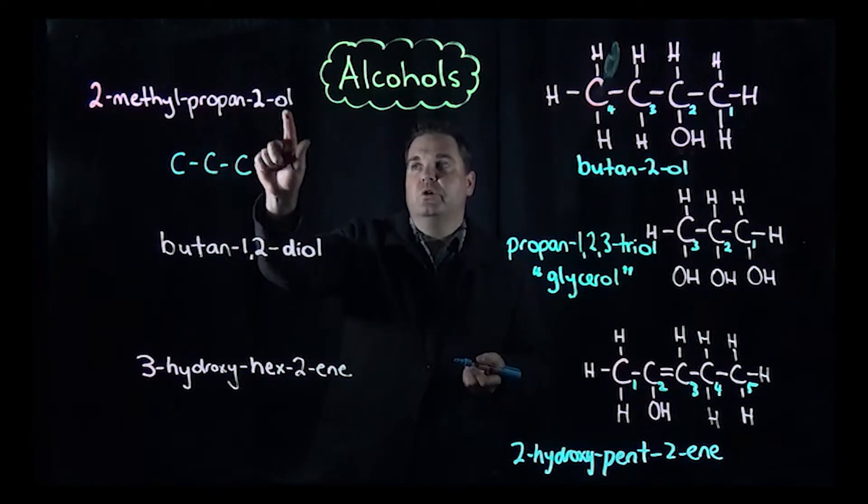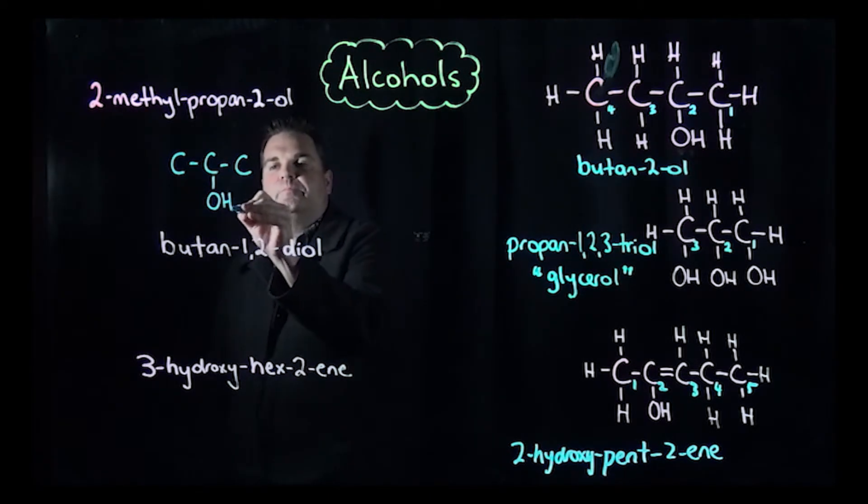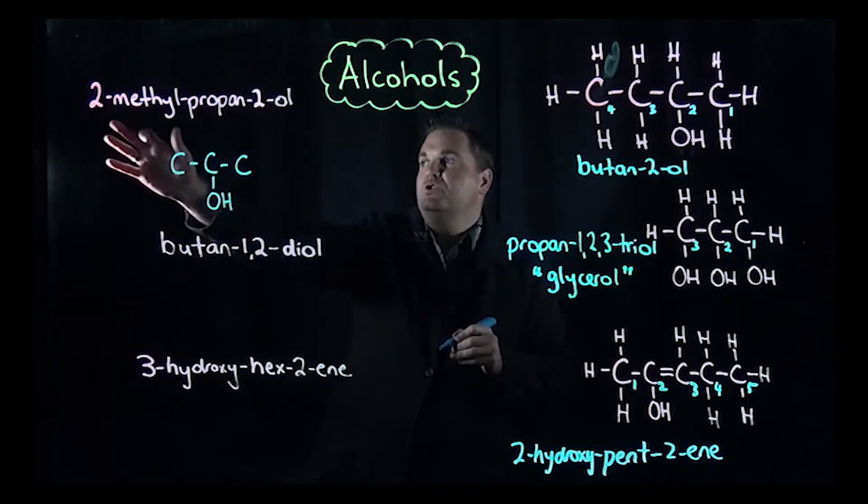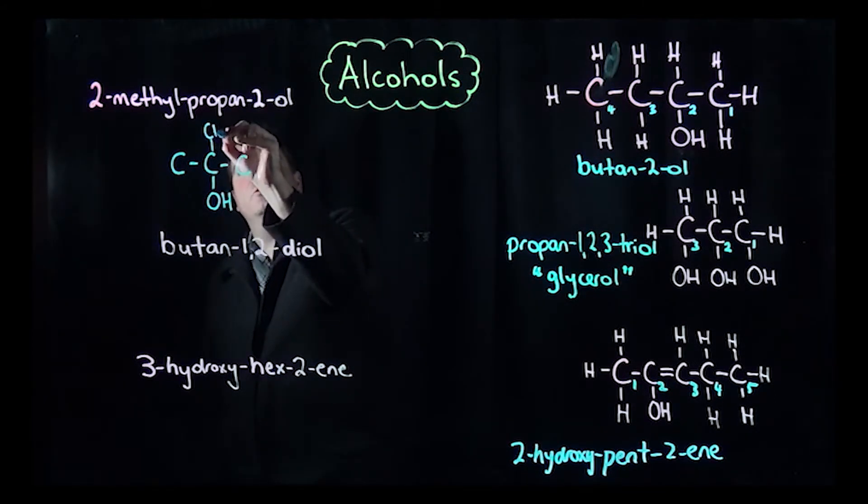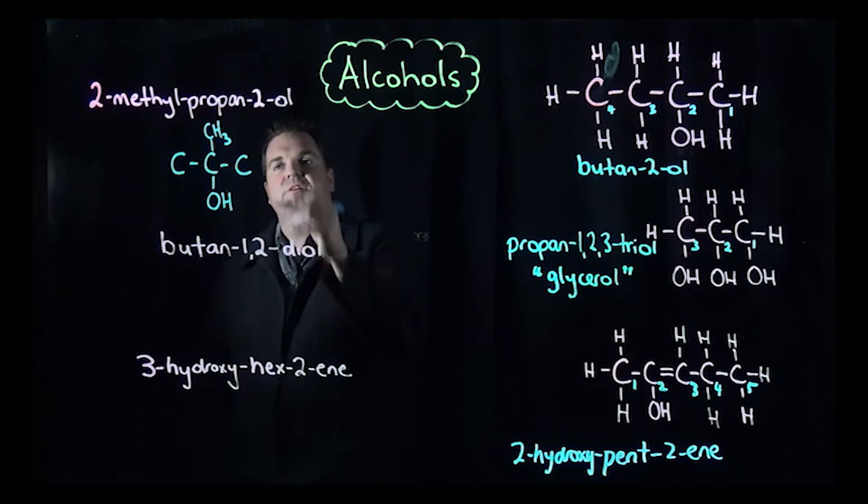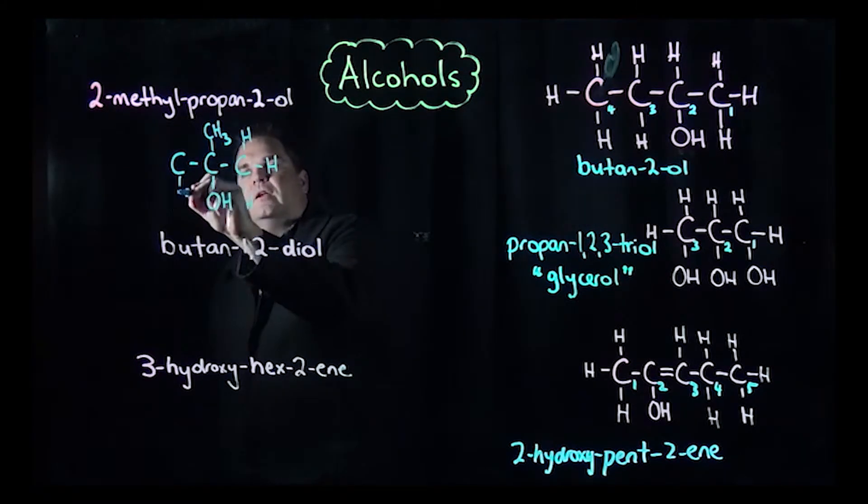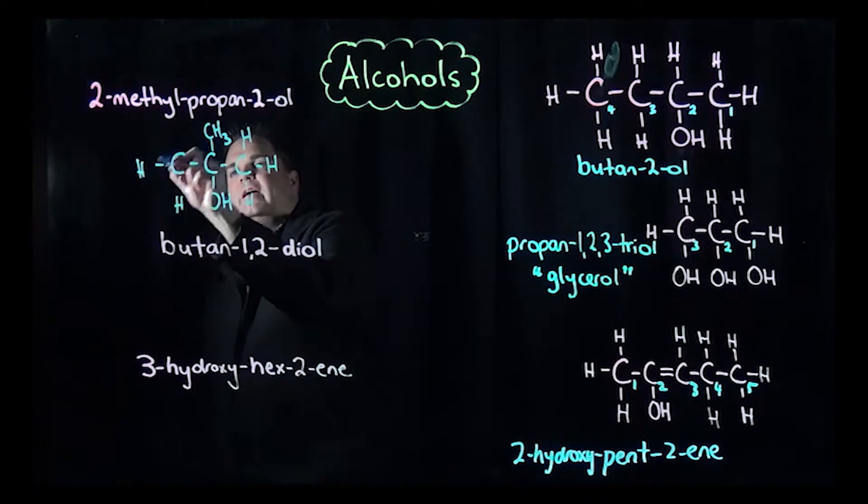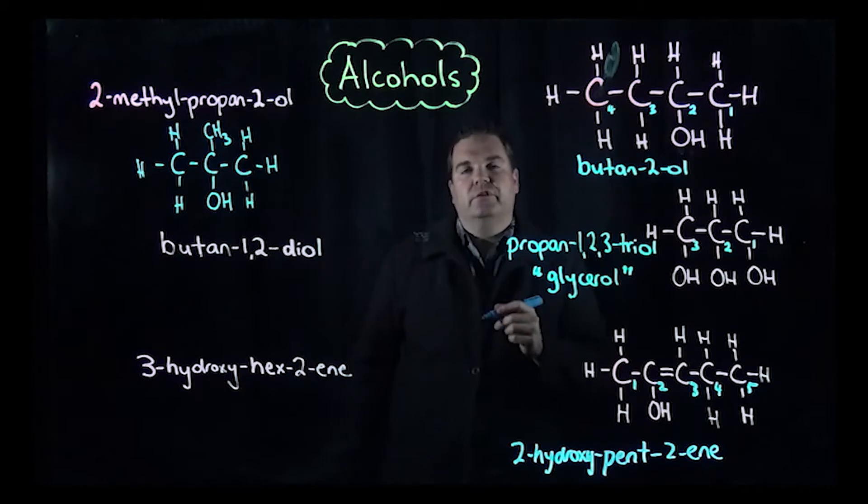It's propan-2-ol, which implies on the second carbon we've got an OH group. It's 2-methyl, which means on the second carbon we've also got a methyl group. Then you put in the rest of your bonds to make four on every carbon.